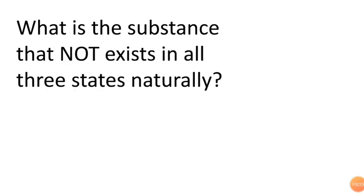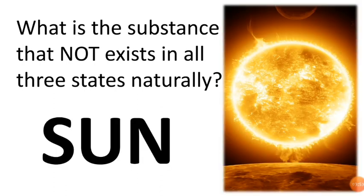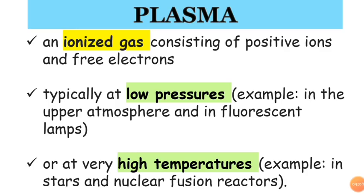Why is a substance that not exists in all the three states naturally? Means that the substance is not solid, it's not liquid, and it's not gas. The answer is the sun. The sun is made out of plasma.